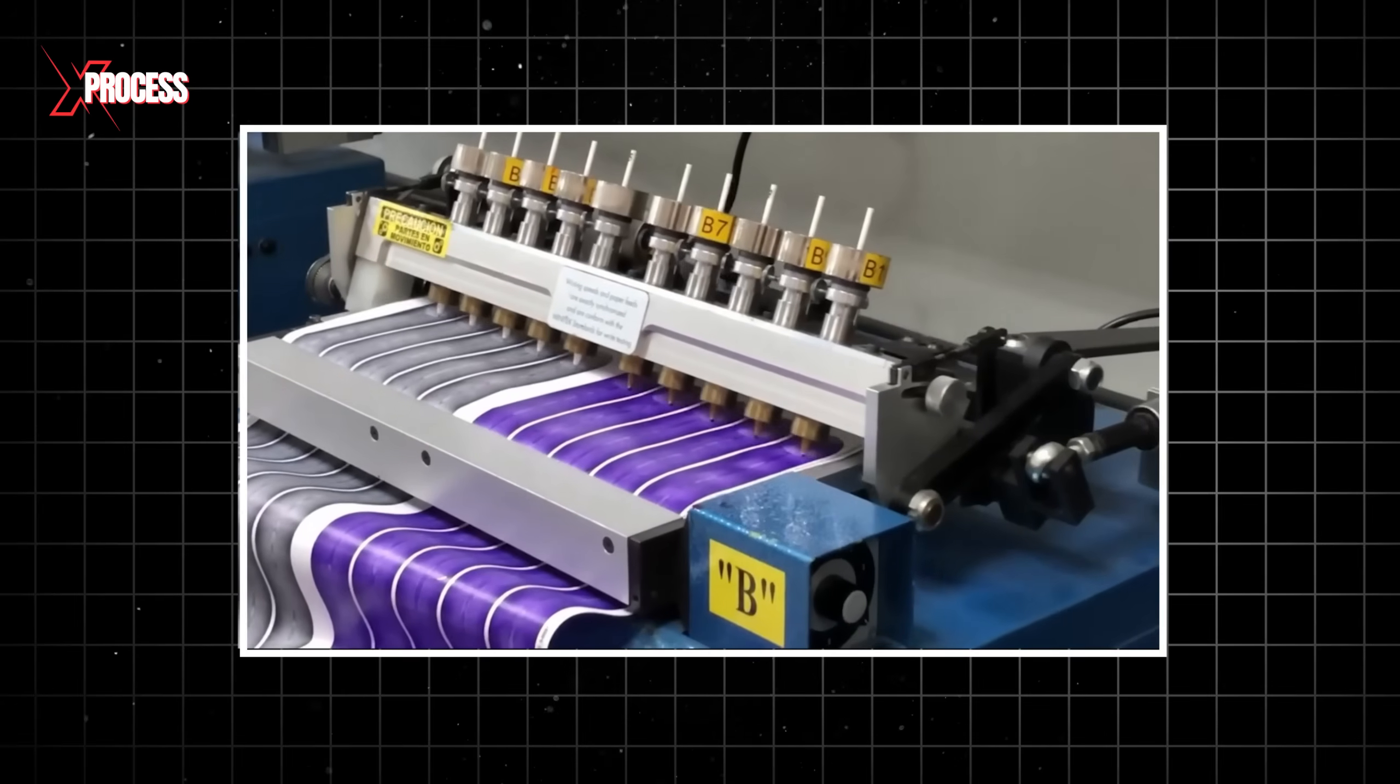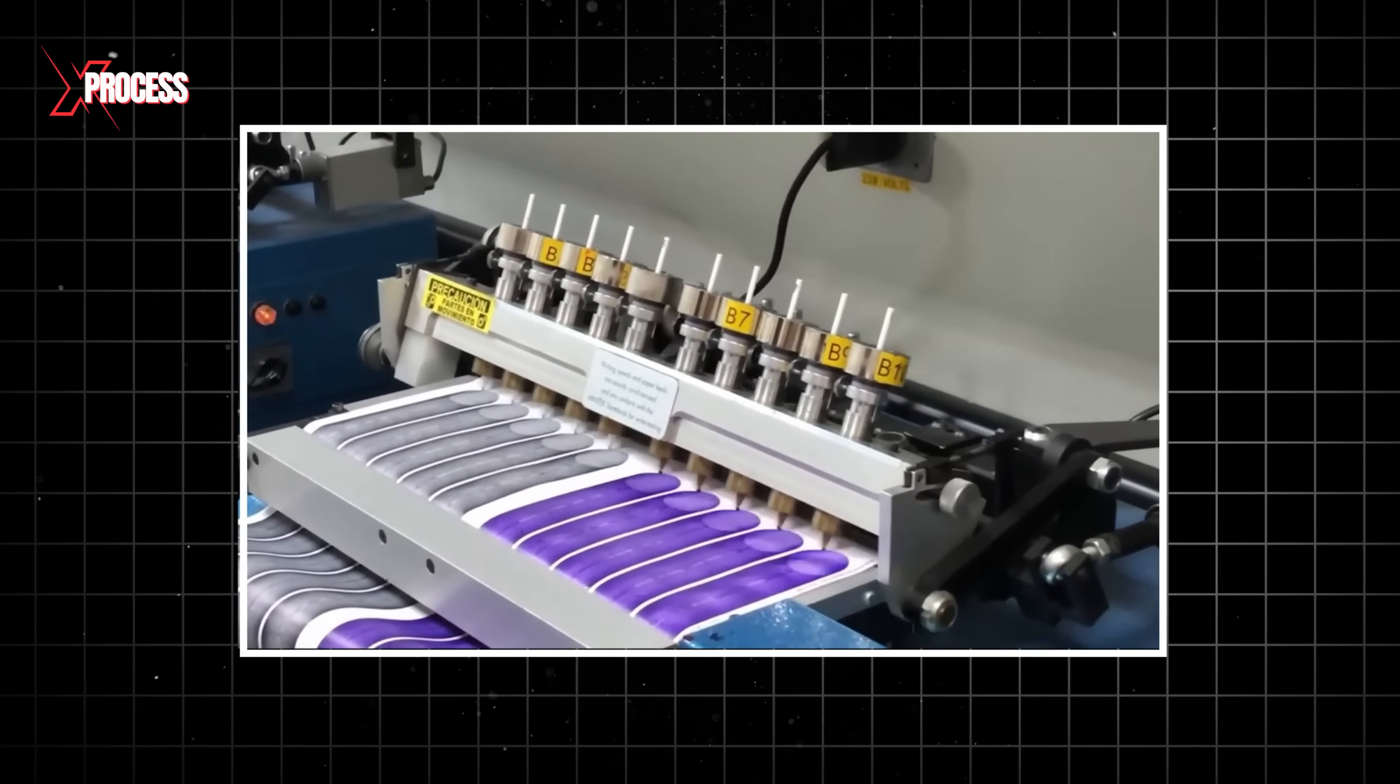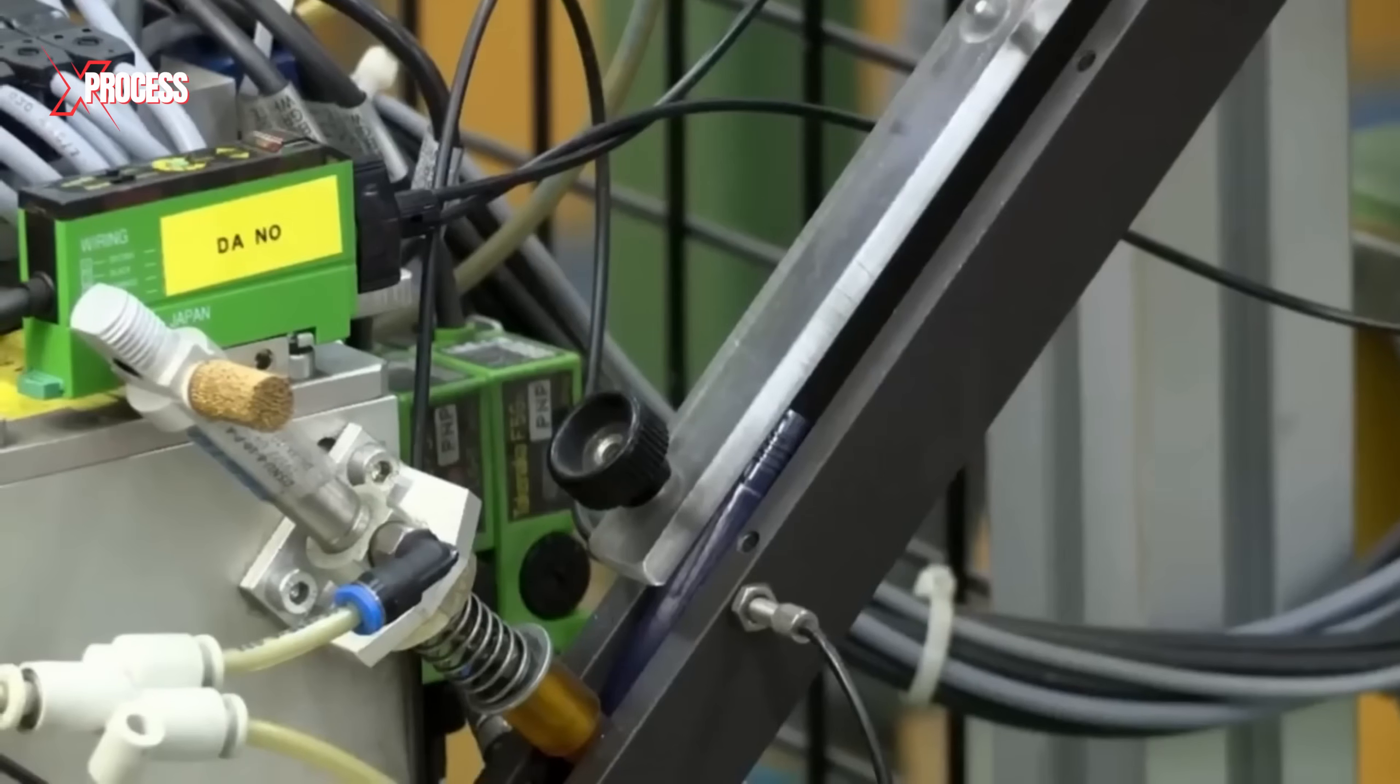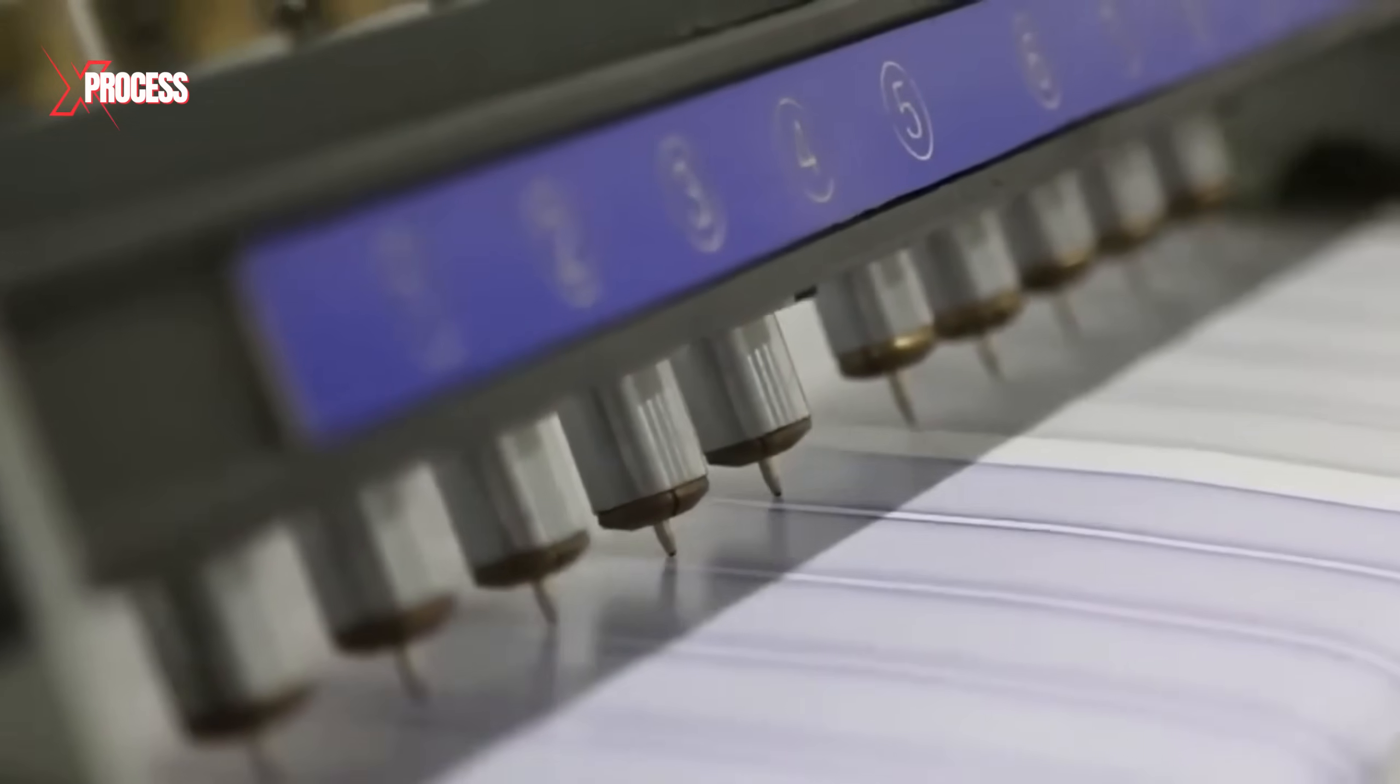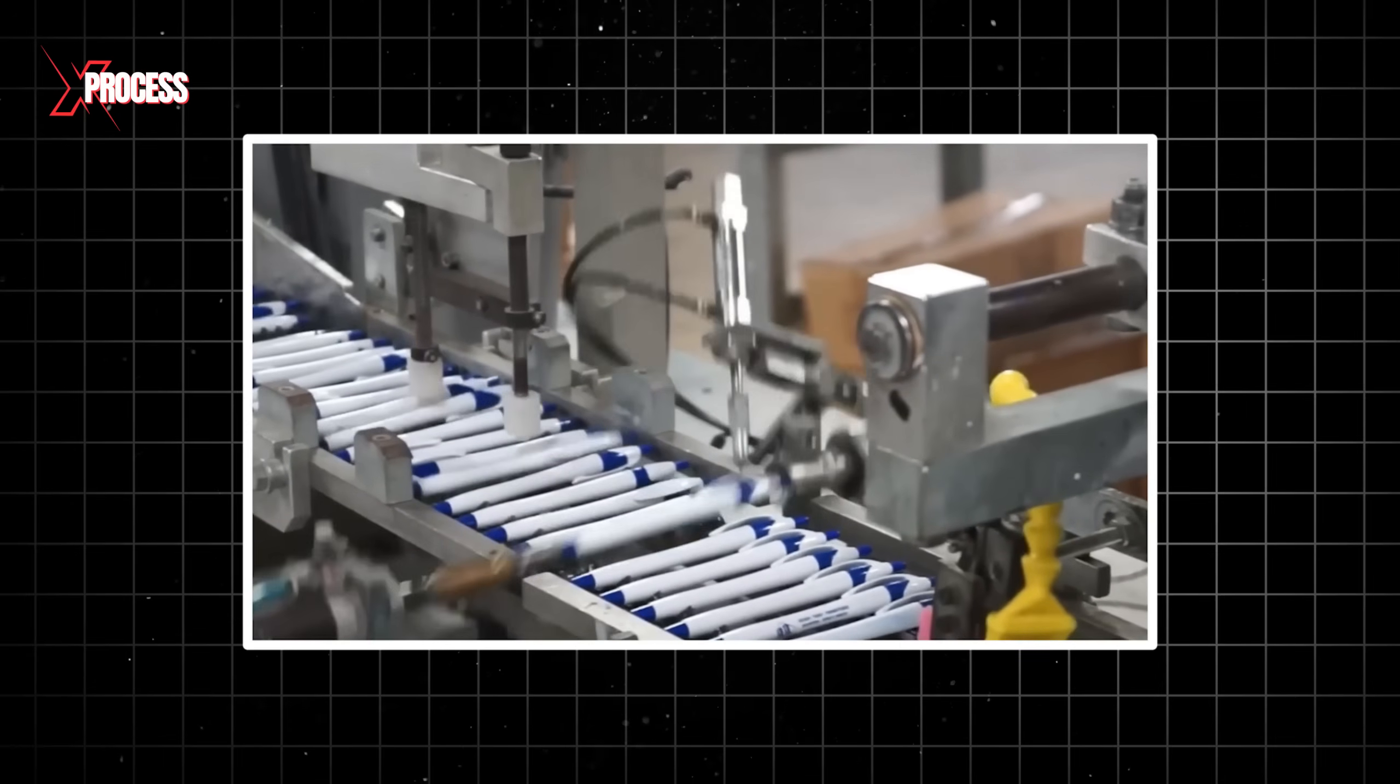These pens are tested to draw a continuous straight line without interruption, with the ink lasting for more than 2 kilometers without running out. For retractable pens, an additional step is required at this stage, adding a spring to enable the retractable mechanism. A mechanical shaft is added, followed by attaching a plunger with notches that fit into the teeth of the shaft.